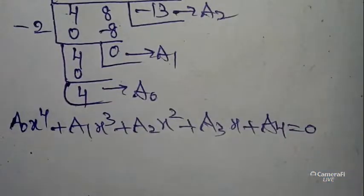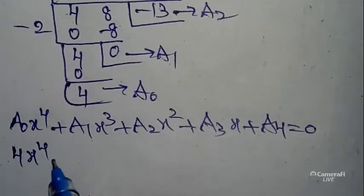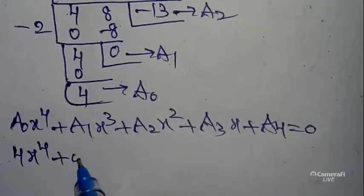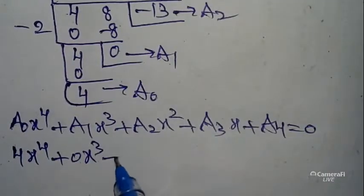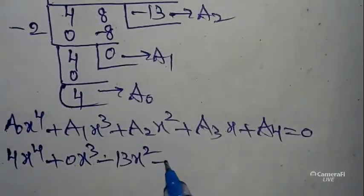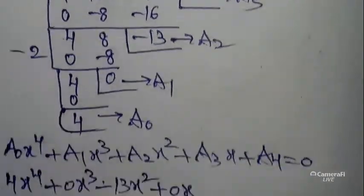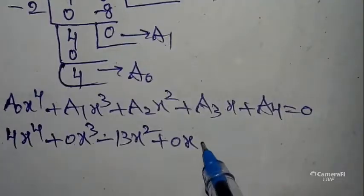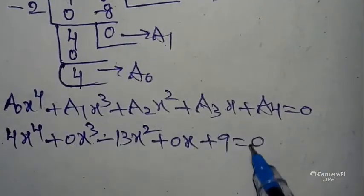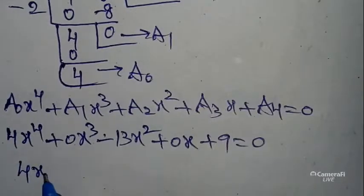Substitute A₀, A₁, A₂, A₃, A₄ values here. A₀ value is 4x⁴ + A₁ value is 0x³ + A₂ value is -13x² + A₃ value is 0 × x + A₄ value is 9 = 0.